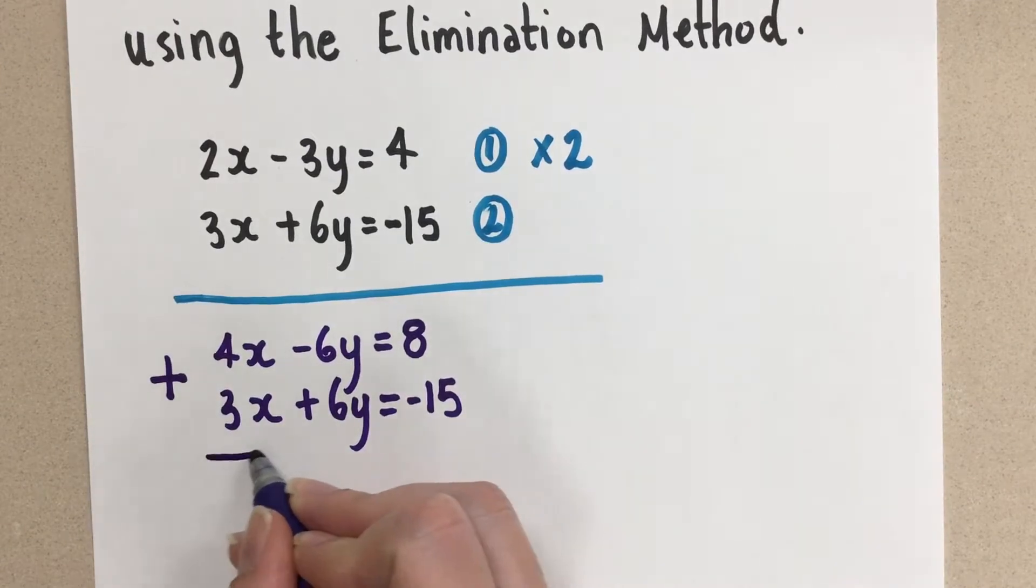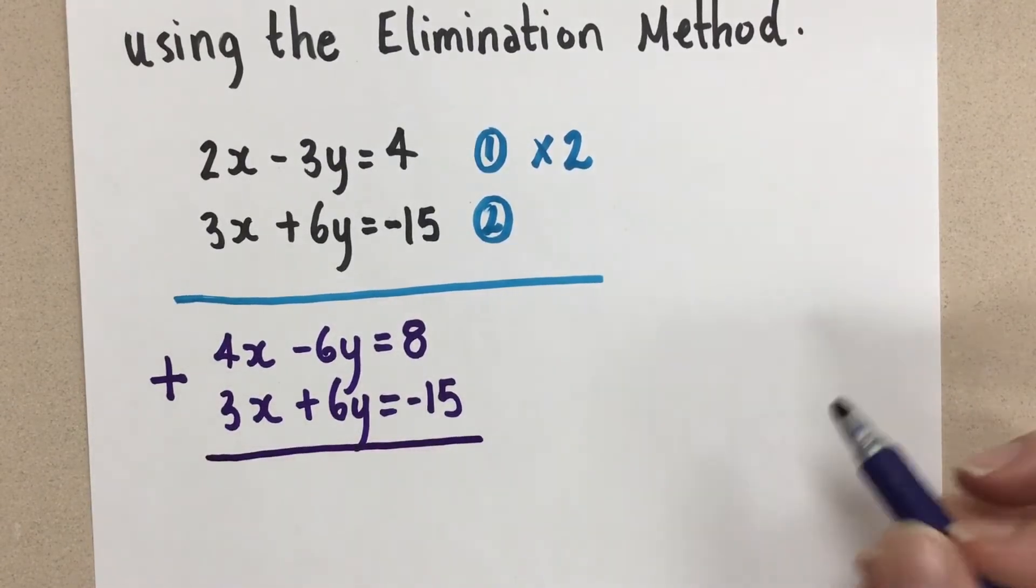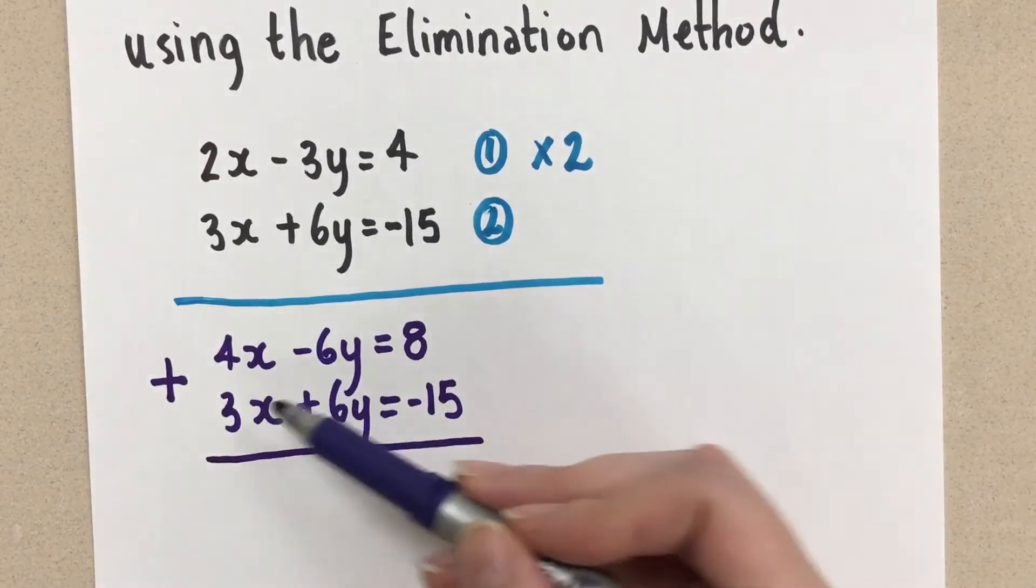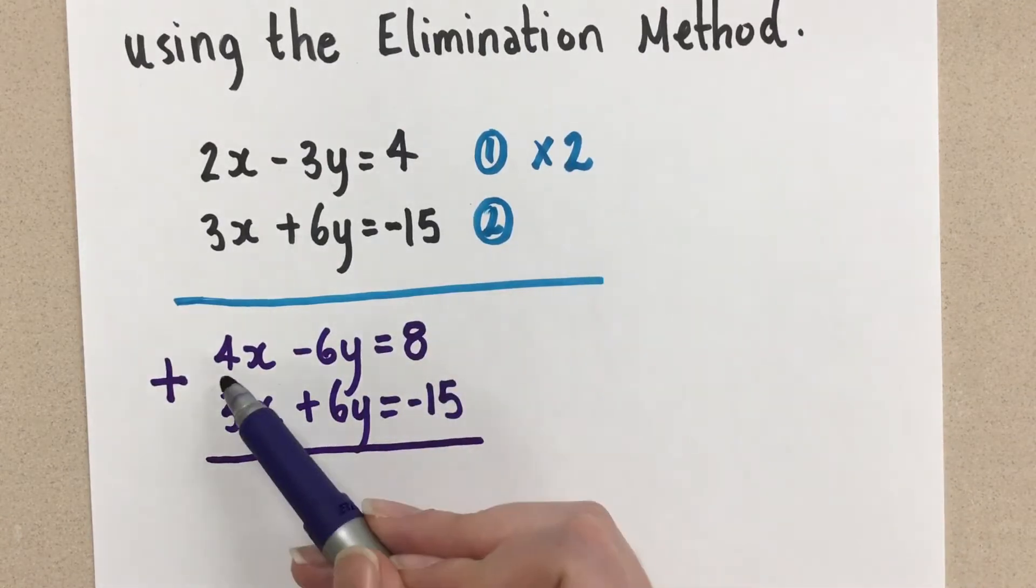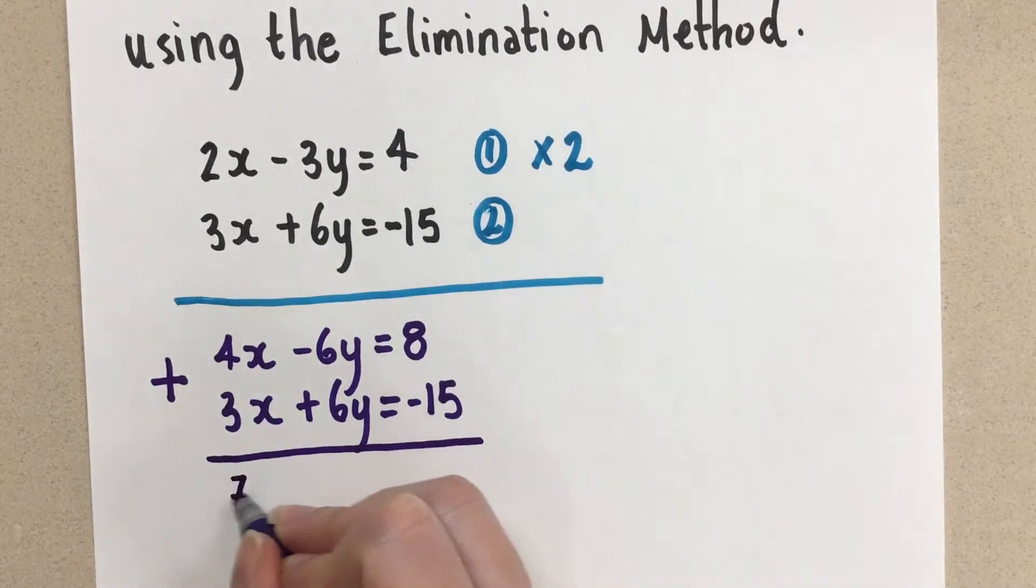So now let's do this. And we have to do it in columns again, because we want the like terms to come together. So 4x plus 3x gives us 7x.